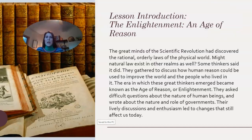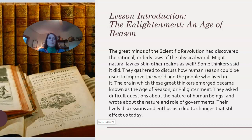Let's get started. For our introduction — the Enlightenment and Age of Reason — the great minds of the scientific revolution discovered the rational, orderly laws of the physical world. Some thinkers asked whether natural law might exist in other realms as well. They gathered to discuss how human reason could improve the world. This era became known as the Age of Reason or Enlightenment, and their discussions led to changes that still affect us today.